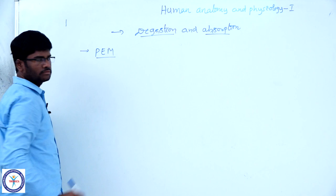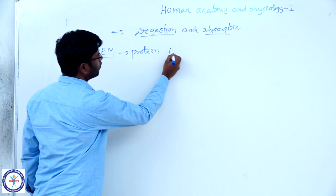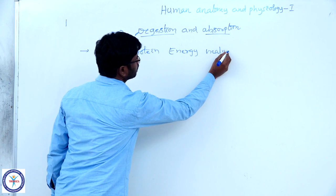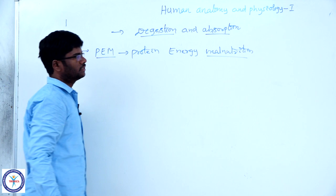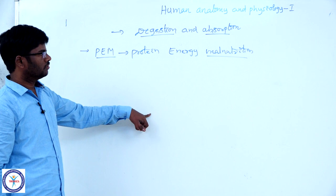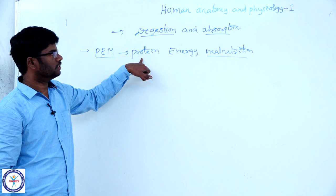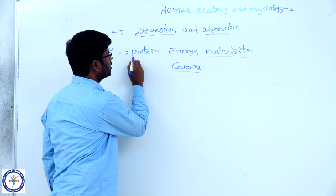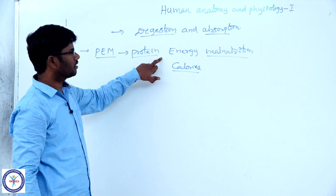Now come to protein energy malnutrition. Malnutrition means lack of a certain component in the diet. Malnutrition means deficiency of certain components, particularly proteins and calories. Deficiency of dietary proteins and calories is generally seen in certain countries, particularly underdeveloped ones.